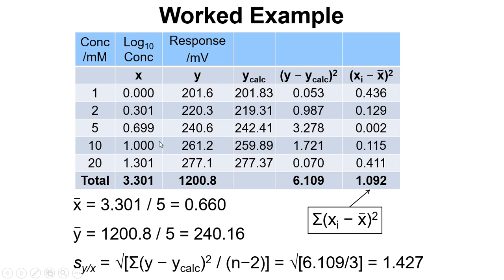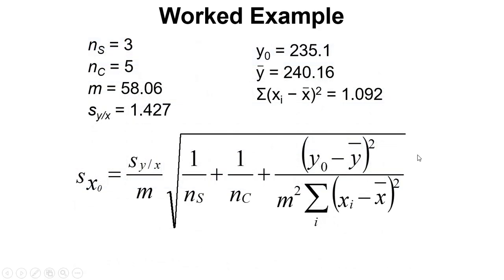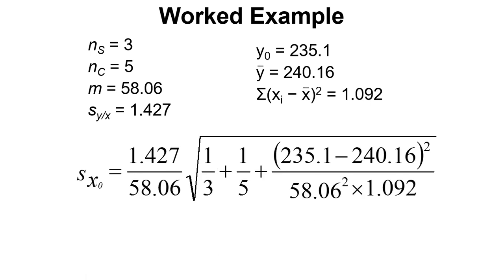Here's the data again for X and Y. We work out some Y calcs from the line of best fit. Then we can work out residual squared, Xi minus X mean squared, and then these values are what get used within the error equation. So we can plug those numbers in and we can work out an error in X0 based on the calibration data that we've got and the value for the unknown for Y0.